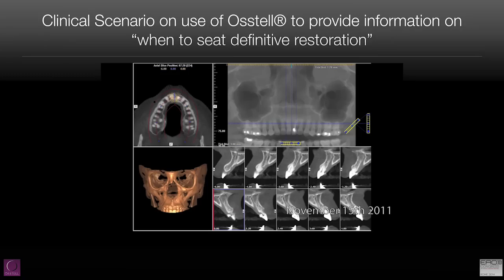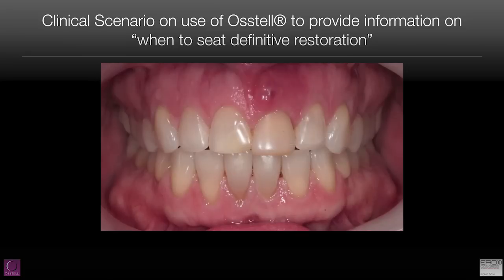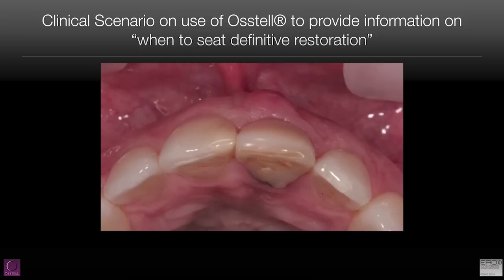Let's take you through this clinical scenario. Here's a patient that requires tooth number nine removed. As you can obviously see, there's a fistula, there's edematous tissue, there's inflammation, and there is a hopeless tooth.